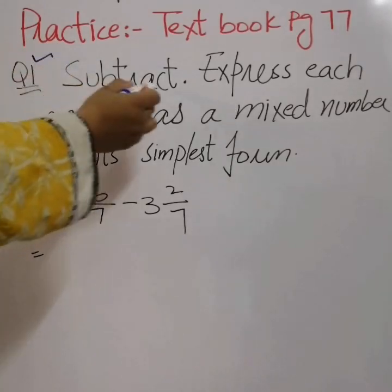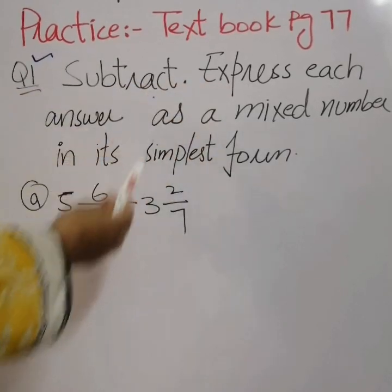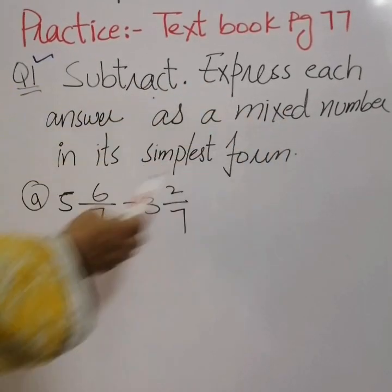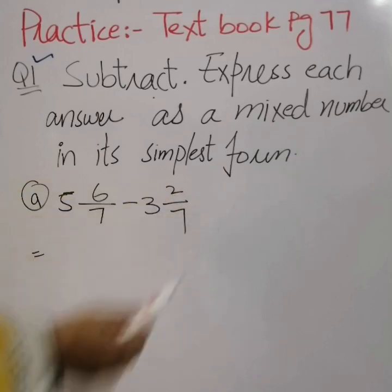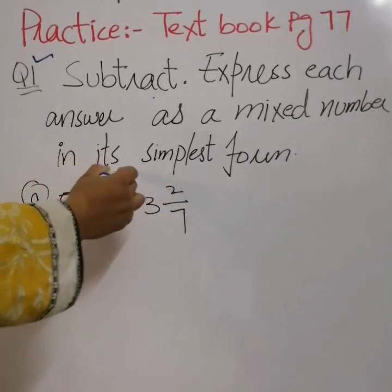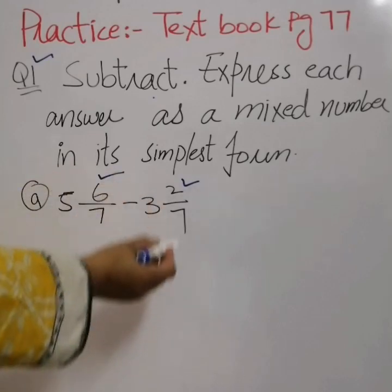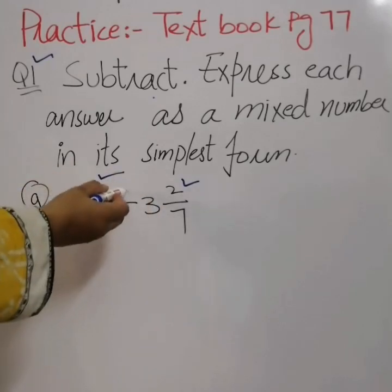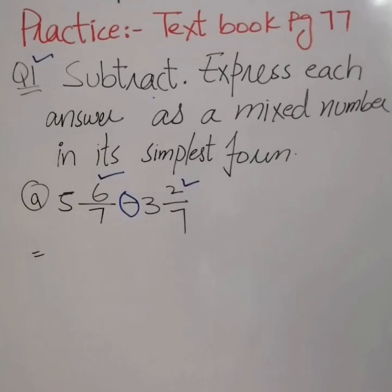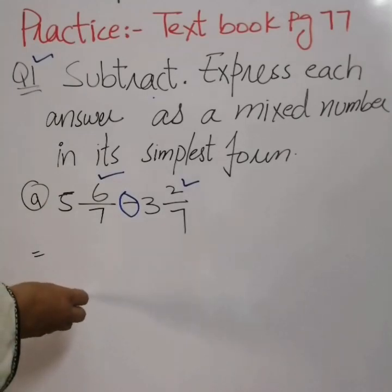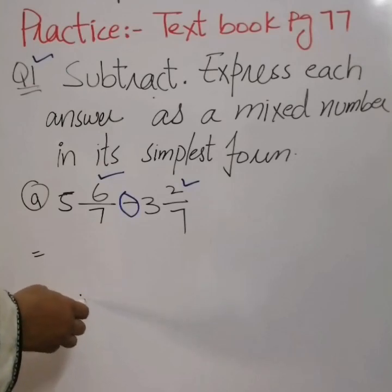Question number one: subtract, express each answer as a mixed number in its simplest form. We have two mixed numbers. We convert these mixed numbers into improper fractions, then we solve the fractions. We separate the fractions, find out the answer, and if the answer is an improper fraction then we find its mixed number form.